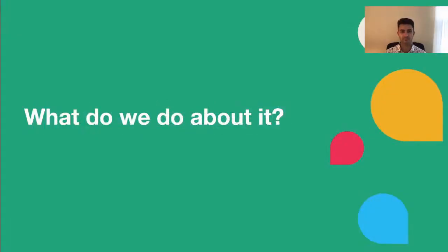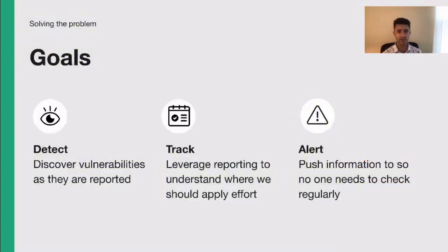What do we do about this problem now? When we started, we defined three goals for a good solution. The first is we want to detect vulnerabilities as soon as they're publicly available, because we want to be on top of the fixes as quickly as possible. Second, we want to track any vulnerabilities or weaknesses in our codebase — we want insight into where we have risk so we can better fix it. Finally, we want to alert when we have a problem. No developer should ever have to think, "I should scan my repo before I deploy to production."